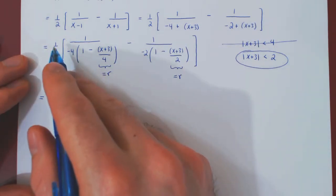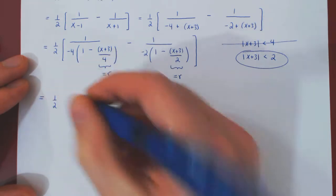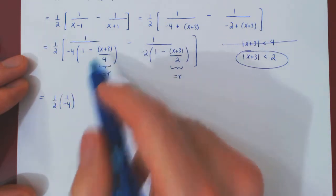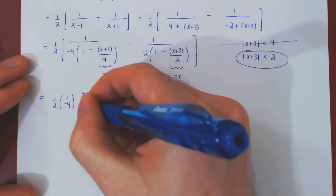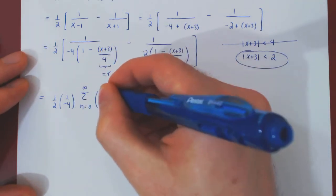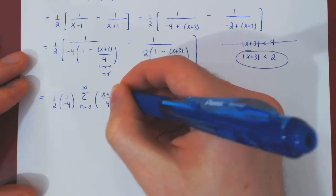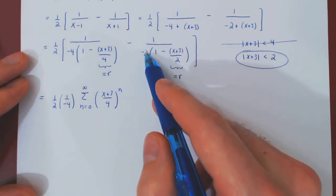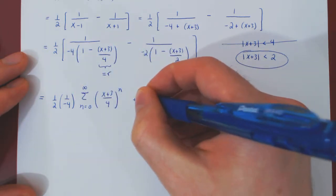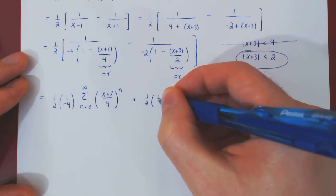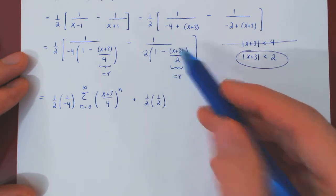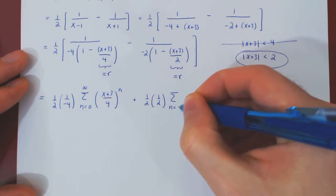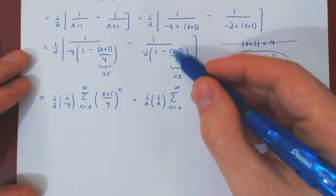So the first series — multiplying by 1 half — will be 1 half times 1 over negative 4, times the sum from n equals 0 to infinity of (x plus 3 over 4) to the n. Then positive 1 half times 1 over negative 2 gives 1 half times positive 1 half, times the sum from 0 to infinity of (x plus 3 over 2) to the n.